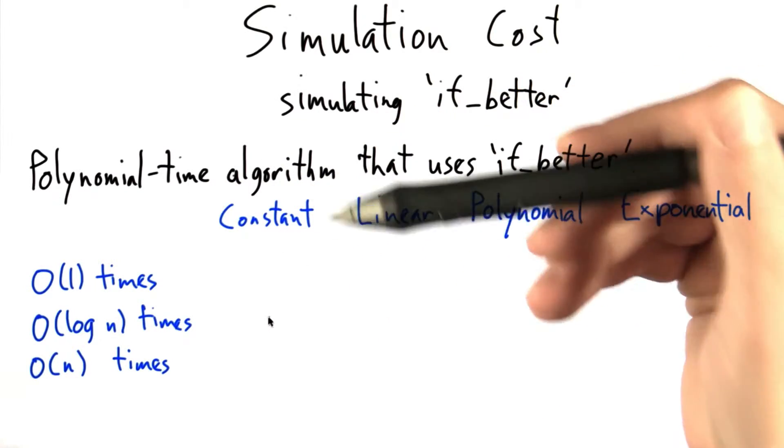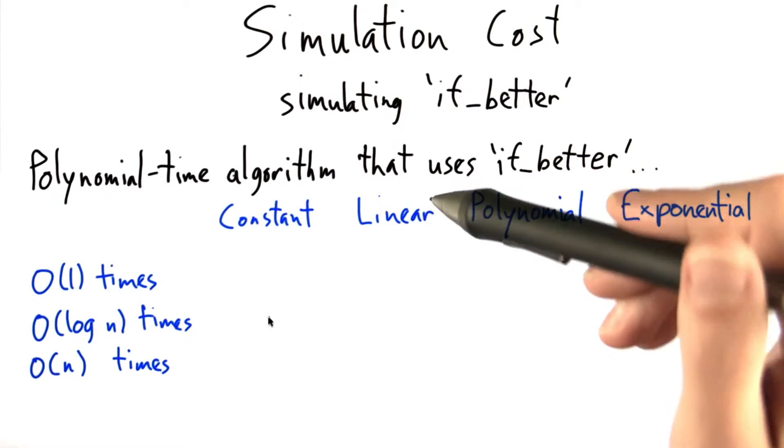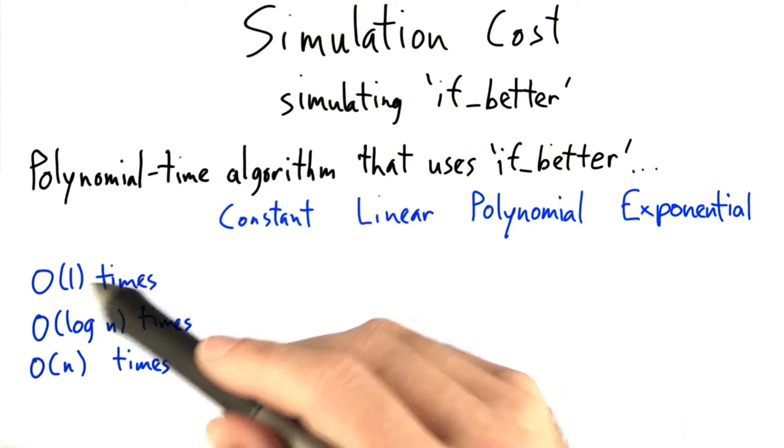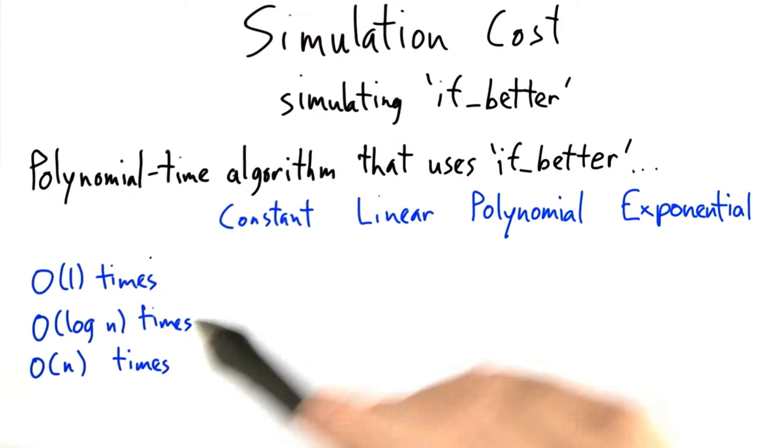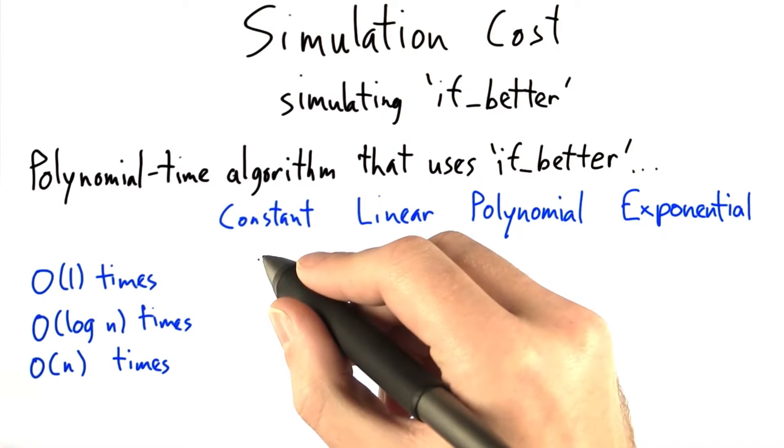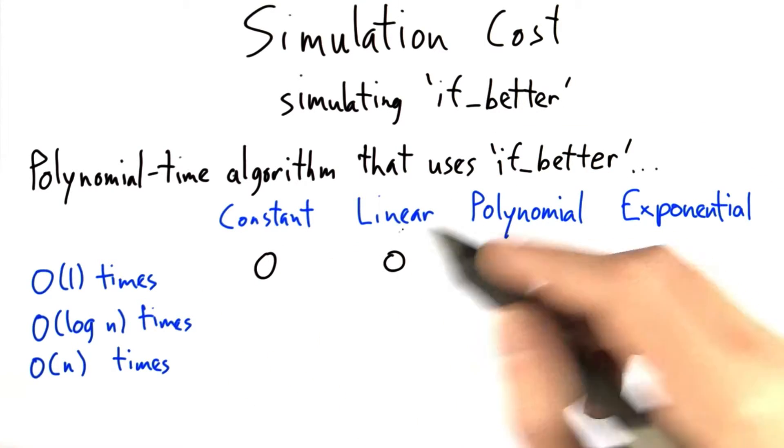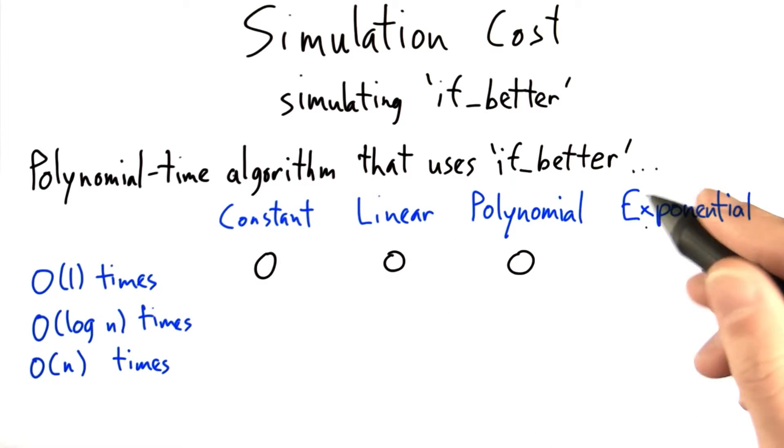Let's say we have a polynomial time algorithm and that algorithm uses if-better a constant number of times. Then does that mean the simulation on the deterministic RAM takes a constant number of time, a linear amount of time, a polynomial amount of time, or an exponential amount of time?